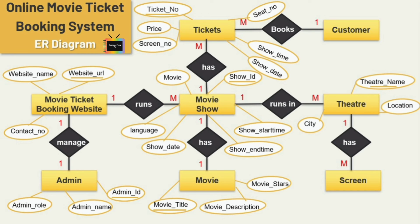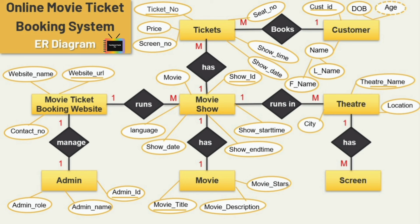For the customer entity, the first attribute is customer ID, which is the key attribute. The second attribute is name — here I am using a composite attribute, breaking down the name attribute into two sub-attributes: first name and last name. Next is date of birth. User age is a derived attribute, as it changes over time and can be derived from date of birth. We have also used a multi-valued attribute for mobile number, because one user can have various contact numbers. The last attribute is email ID.